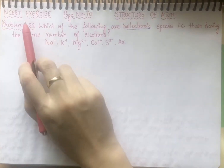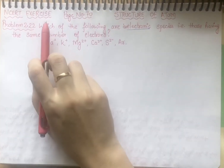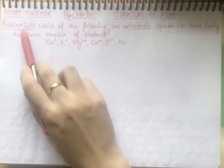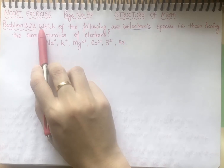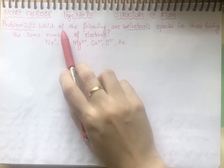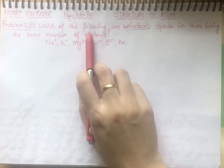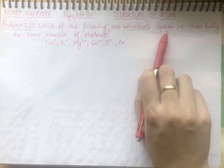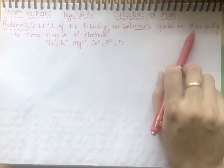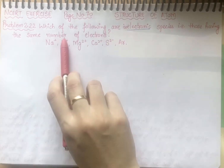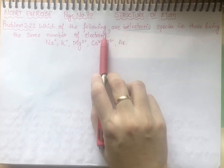Hello students, this is NCERT exercise page number 70, problem number 2.22 and we are asking which of the following are isoelectronic species? That means those having the same number of electrons.